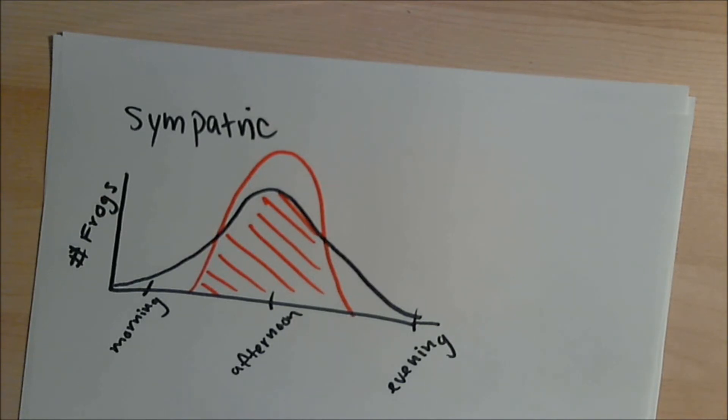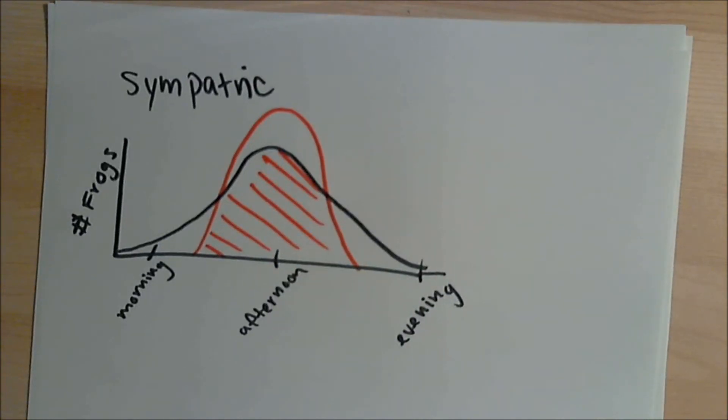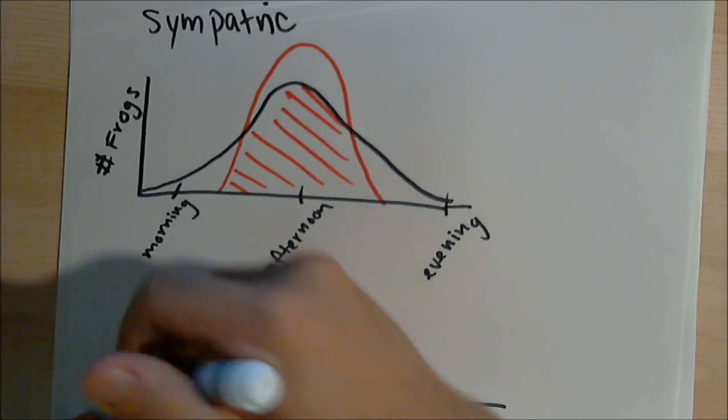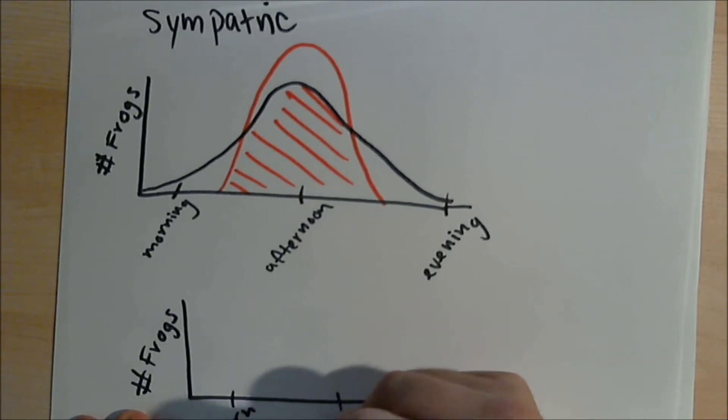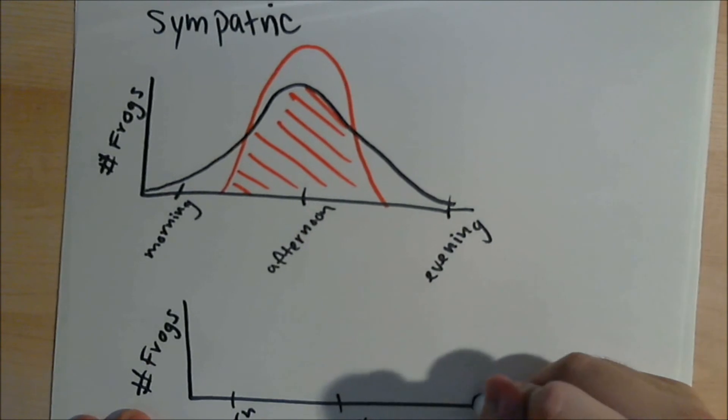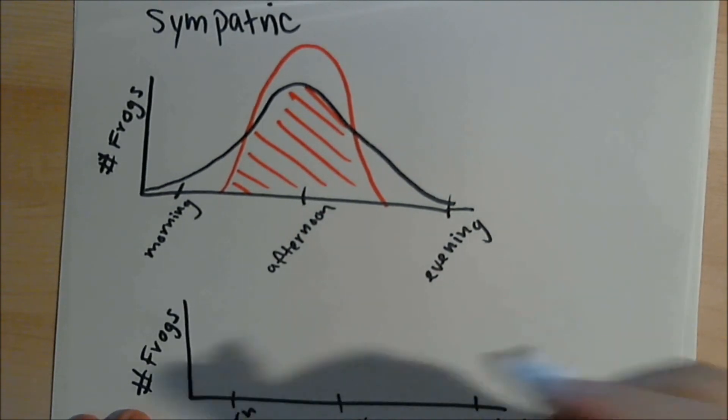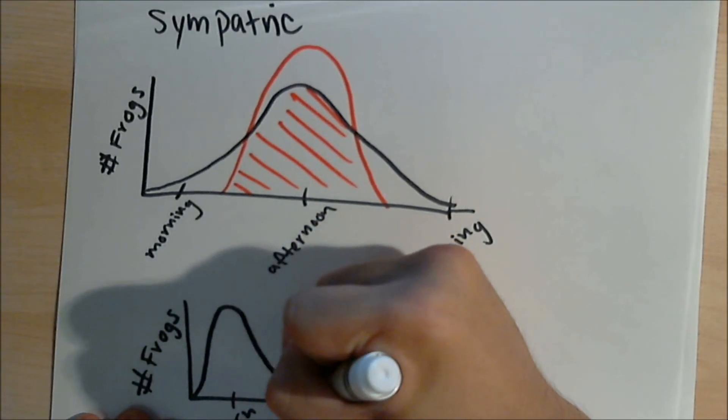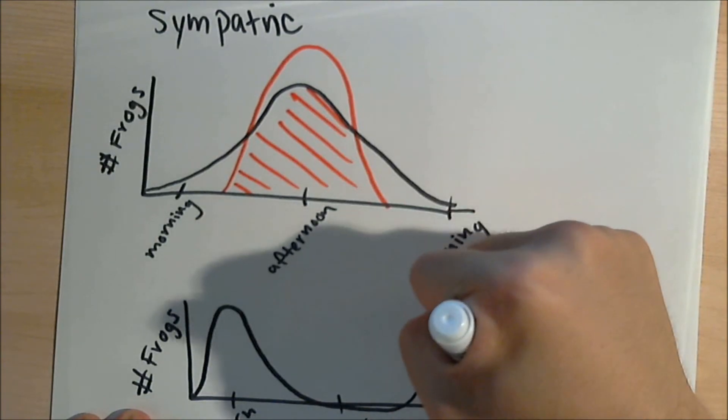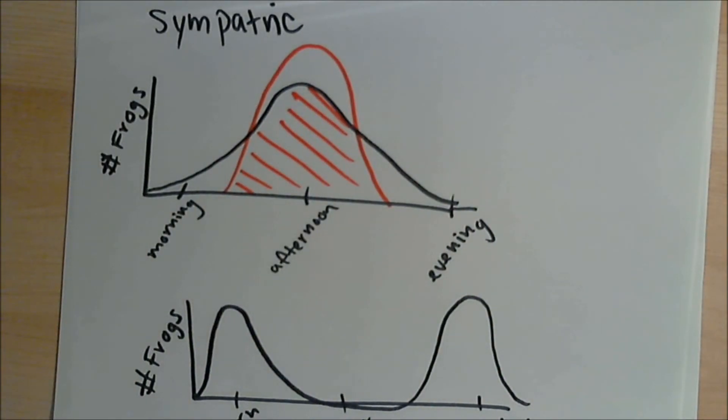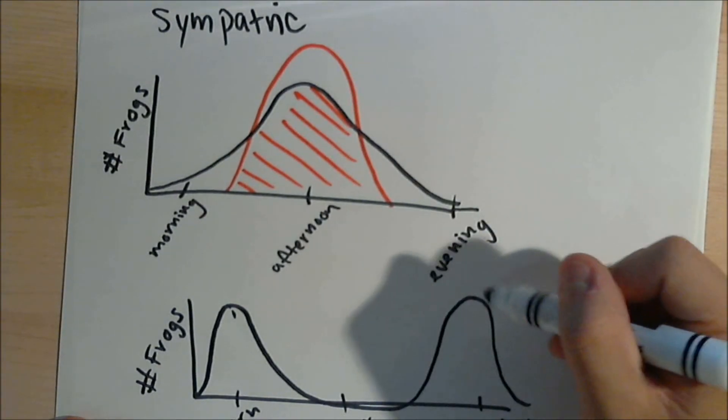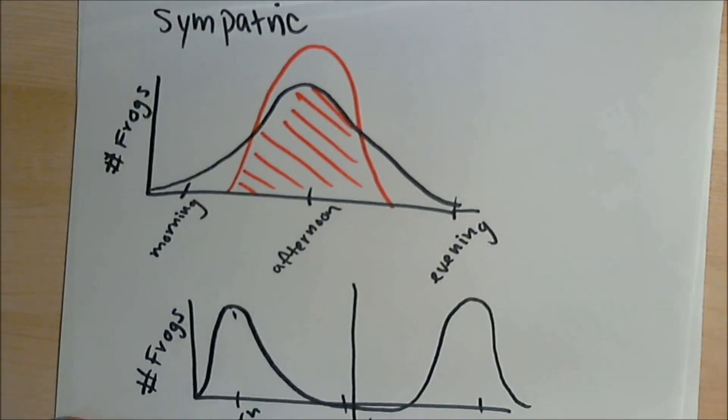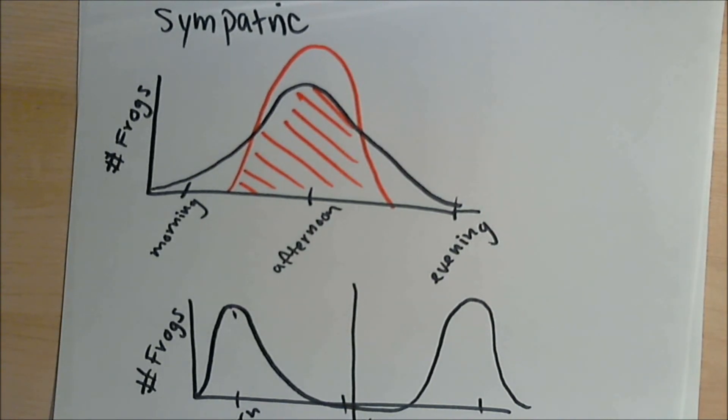And the frogs in the morning and the evening will be mating with each other. After a long time, the graph would probably look something like this. So the frogs right over here were eventually mating with each other, and the frogs during the evening were mating with each other. That would stop the gene flow between them and they would probably never see each other again, eventually speciating, becoming different organisms. And that is allopatric and sympatric speciation.